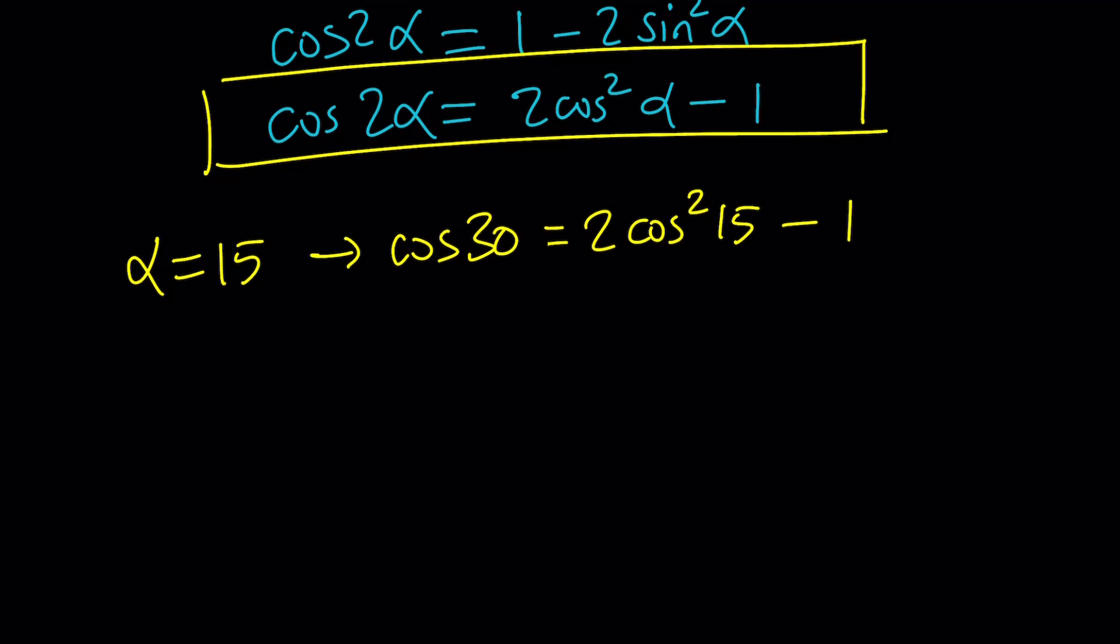So cosine 30 is known. I think it's √3 over 2. And if you forget that, always draw a 30-60-90 triangle. By the way, that's half of an equilateral triangle. The shorter leg is 1, the hypotenuse is 2, and from the Pythagorean theorem, the longer leg is √3. So cosine 30 is adjacent over hypotenuse, √3 over 2.